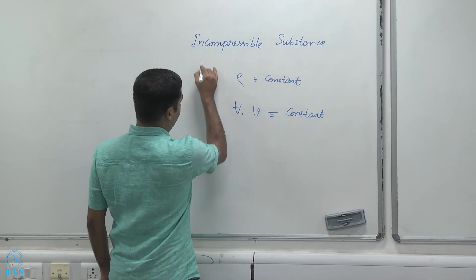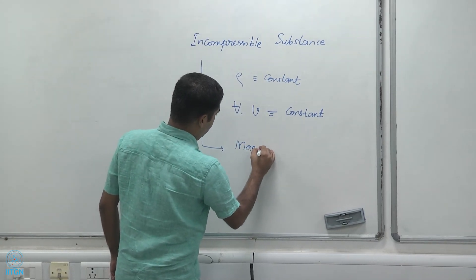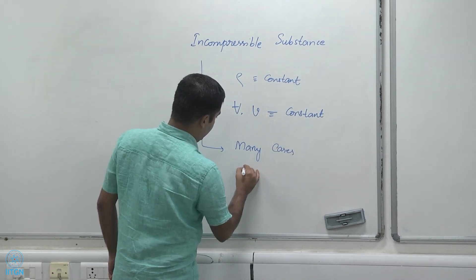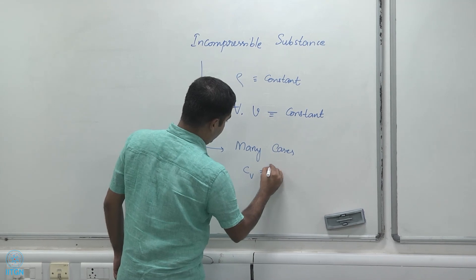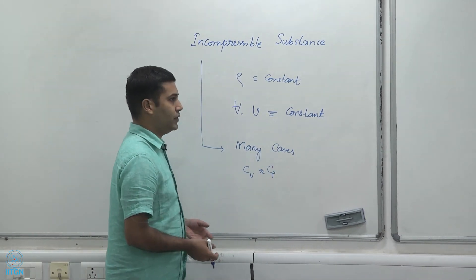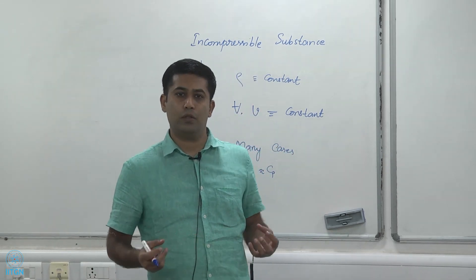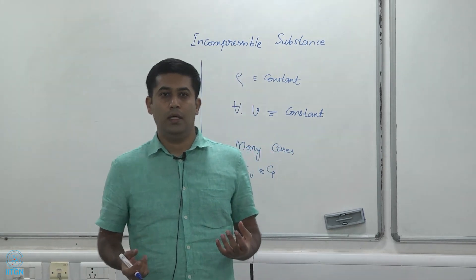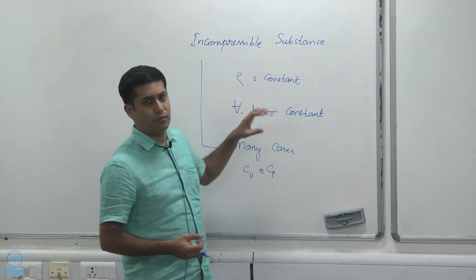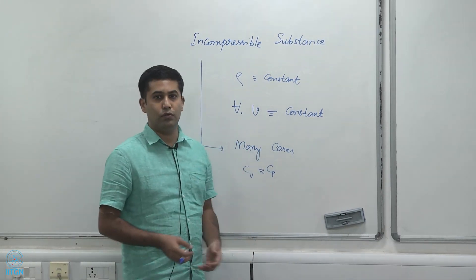For these substances, the Cv and Cp values are approximately equal. Why? Because their volume does not change anyway. Whether it is a constant volume process or a constant pressure process, they end up with the same specific heat. The reason is that their volume does not change by much, so their Cv and Cp values are very close.